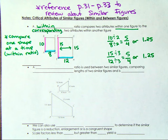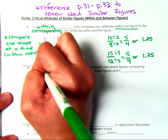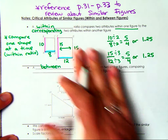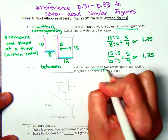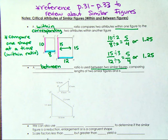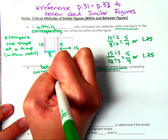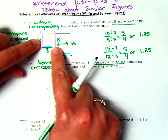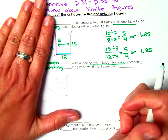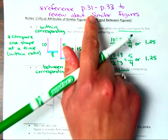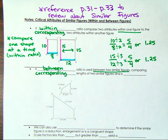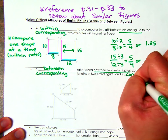So that's our within ratio — looking at one shape at a time. We also have what's called a between ratio. Within is looking at one shape at a time; between compares the two similar figures simultaneously. You're looking at corresponding sides — the same relative position in each shape. Both within ratios (10:8 and 15:12) reduced to the same thing, 5:4, which confirms these are similar figures, reducing to a constant number of 5:4 or 1.25.